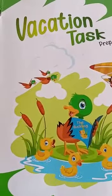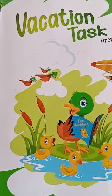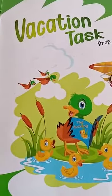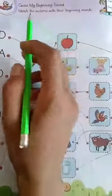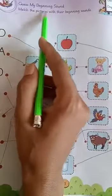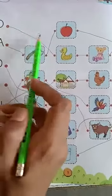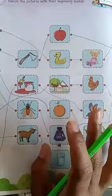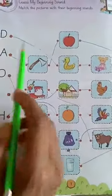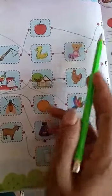Bismillahirrahmanirrahim, assalamualaikum students, how are you? I hope that you are fine. Today we will learn how to solve the SVT of class prep. Here is page number one: match the picture with their beginning sounds. You have letters and capital letters, you have the sound, and in the center you have the pictures. You have to match the picture with the capital letter.